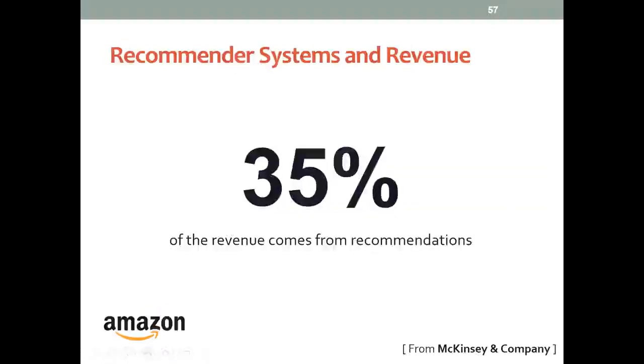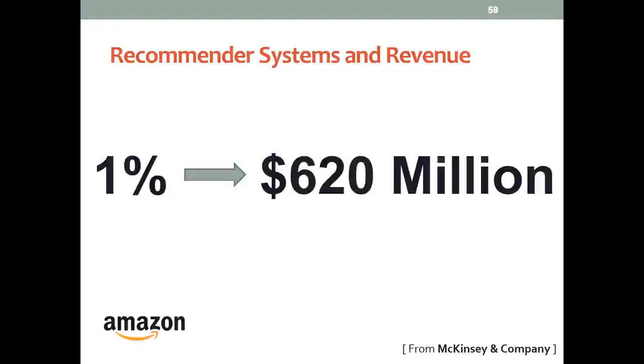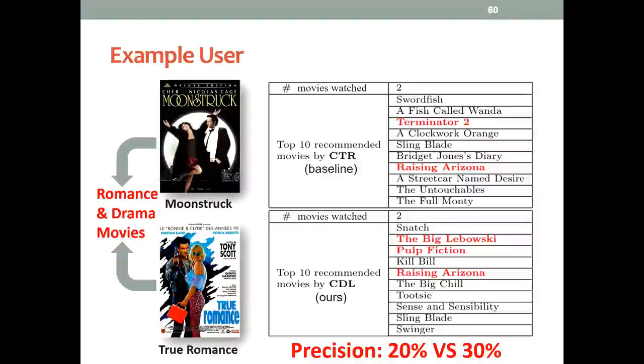So how does this accuracy transform to actual revenue? It's estimated that in Amazon, about 35% of the revenue actually comes from the recommendation. That means about $62 billion per year. If this is true, then one percentage boost of recommendation accuracy can actually lead to about $600 million of increase in revenue. Of course, this is just some very rough estimate, but you can see the scale here.